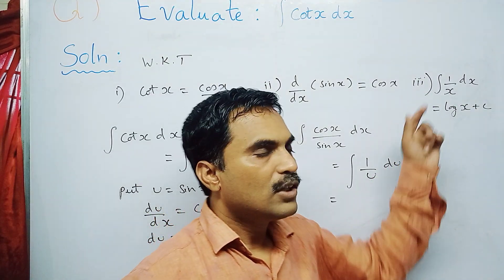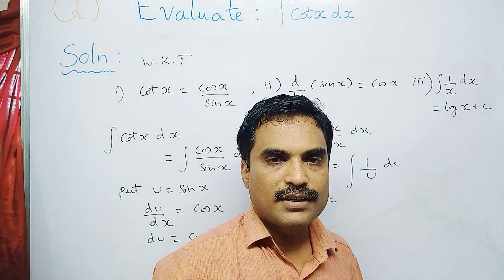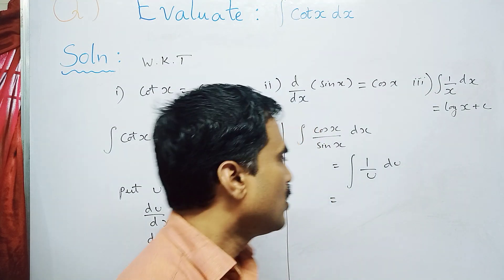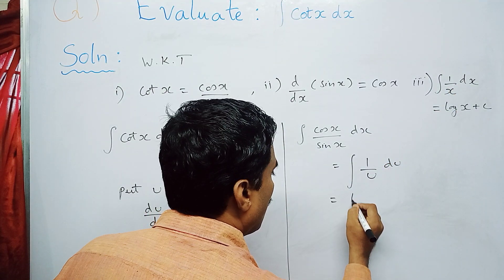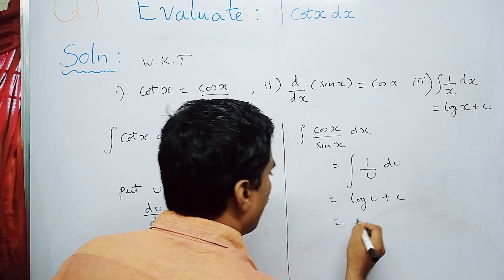Now apply the third formula. What is the third formula? Integral 1/x dx is log x + c. So just replace this x with u, so this will be log u + c.